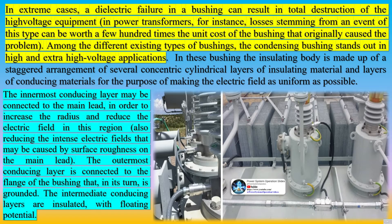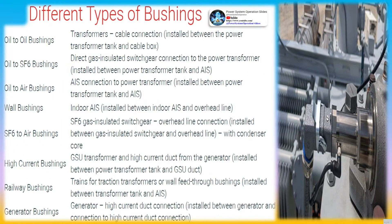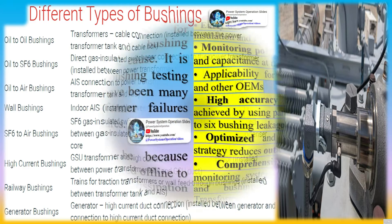To plan replacements, bushings can either be tested periodically by taking outages or be monitored online. Online monitoring provides a much more cost-effective and reliable way to make informed decisions on bushing replacements. There are offline periodic testing practices and online monitoring practices for transformer maintenance. The online continuous monitoring practice has been gaining traction due to high return on investment and effectiveness in not only avoiding failures but also reducing time-based maintenance costs.